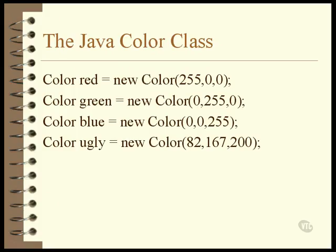You can mix the three primary colors to make any color you'd like. Each of the three primary color values can be set between 0 and 255. In this example, red is set to 82, green to 167, and blue to 200. The three colors are mixed together at these relative intensities to produce a custom color.